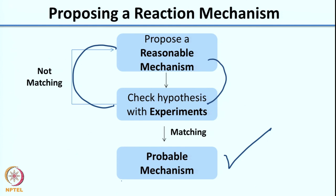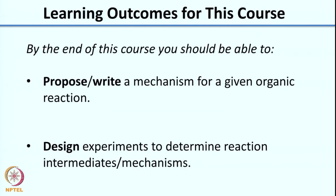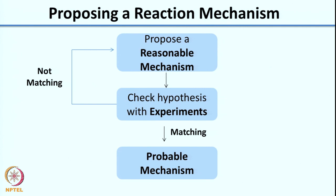For this to work, you need to be able to first propose a reasonable mechanism and second design experiments to figure out if the mechanism is correct. The learning outcomes for this course are: by the end of this course, you should be able to propose or write a mechanism for a given organic reaction, and you should be able to design at least some basic experiments to determine whether your reaction mechanism is correct.